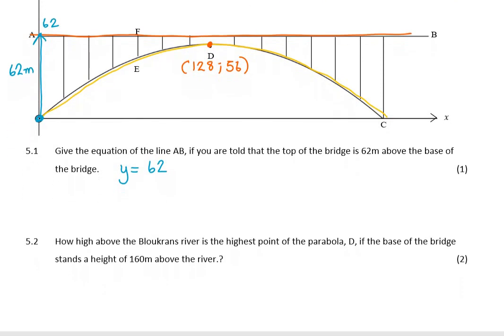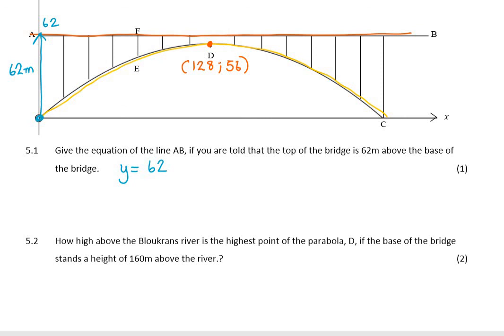The question says, how high is the highest point of the parabola D above the river if the base of the bridge stands 160 meters above the river? I already said the highest point above the parabola is 56 meters below the base of the bridge. But then this base is a further 160 meters above the river. So you've got 160 meters above the river begins the bridge, and then 56 meters. So it's 56 plus 160, which is 216 meters from the river to the peak of the arc of the bridge.